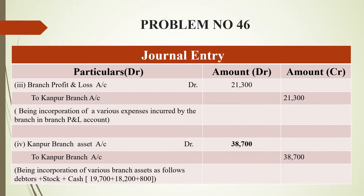The first transaction relates to the return of debit side expenses. If you have any expenses, you can total them. That is: branch profit and loss account debited to branch account. You can total it by the profit and loss account.